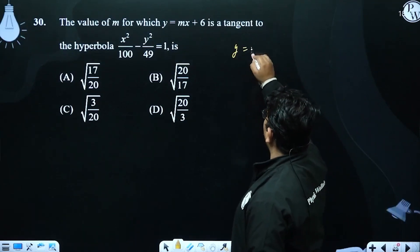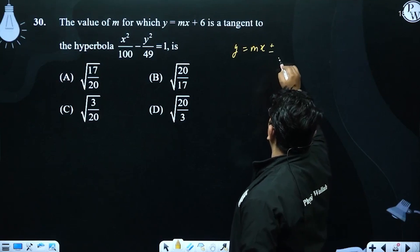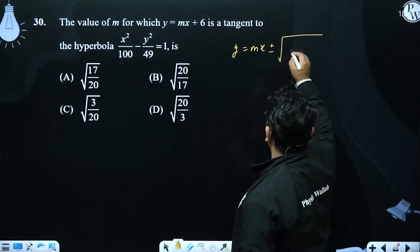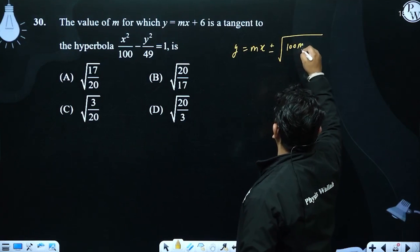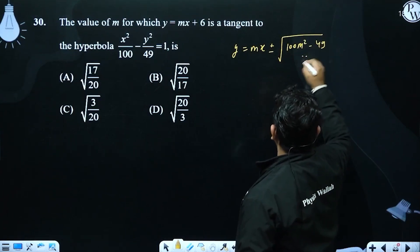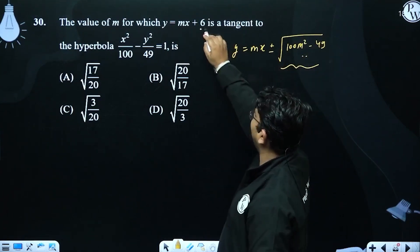So y equals mx plus minus root under a square, that is 100m square minus b square. This constant or y intercept is 6.